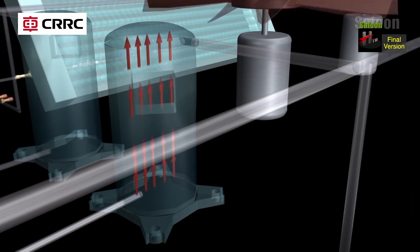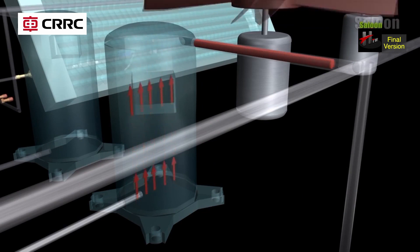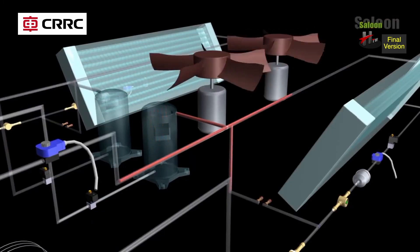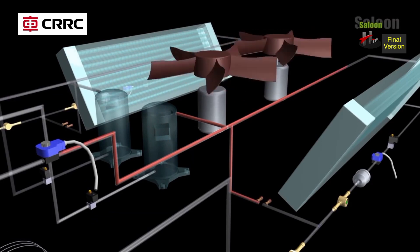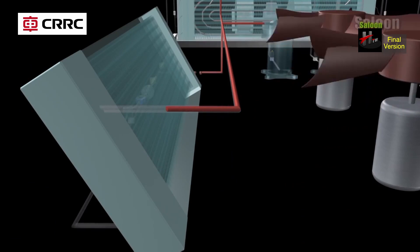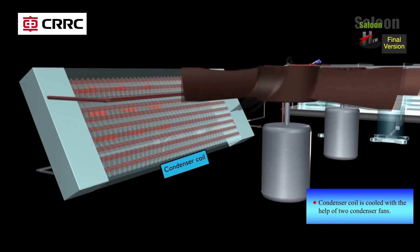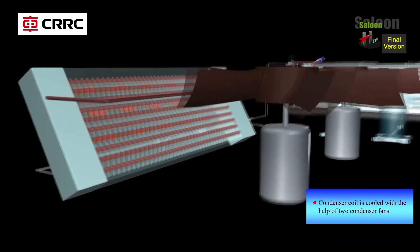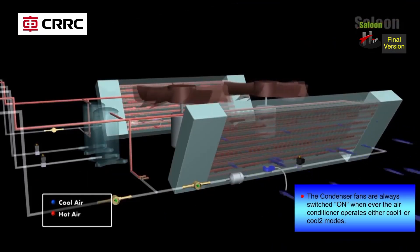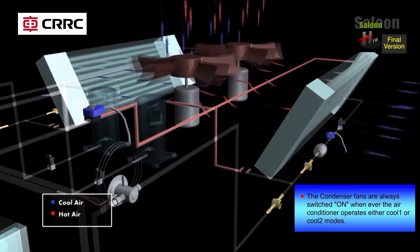Only one of the two condenser fans is switched on when the cooling load is low. Both fans are switched on when the refrigerant discharge pressure in circuit 1 and/or circuit 2 exceeds 20 bar. The condenser fans are always switched on whenever the air conditioner operates in either cool 1 or cool 2 mode.